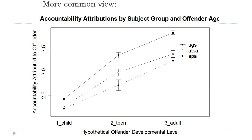In this case the significant effect is an interaction effect — the interaction between factor A (the developmental level of the hypothetical offender) and factor B (the subject group of the participant). There's an interaction between those two variables. We'd have to test it to see if it's statistically significant before we can talk about it.